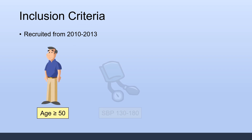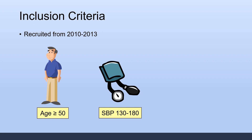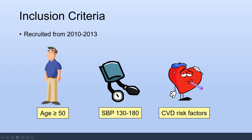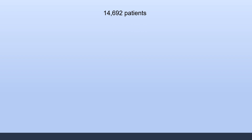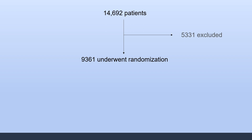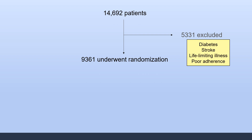Looking at the inclusion criteria, patients were recruited from 2010 to 2013 and were eligible if they were age 50 or older, with a systolic blood pressure of 130 to 180, and a cardiovascular disease risk factor — whether that was a prior MI, PCI, CABG, abdominal aortic aneurysm, CKD, age greater than 75, or a calculated risk score greater than 15%. There were 14,692 patients in total; 9,300 underwent randomization while 5,300 were excluded. The major exclusion factors were diabetes or stroke, but also any life-limiting illness that could skew results or a history of poor medication adherence.